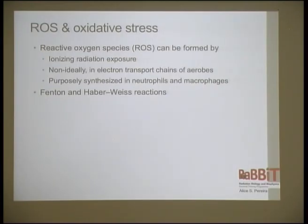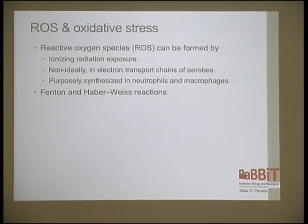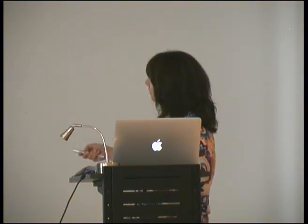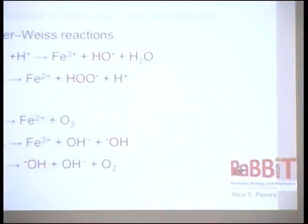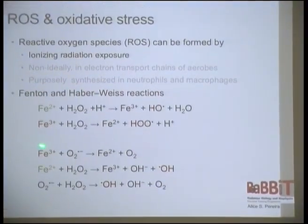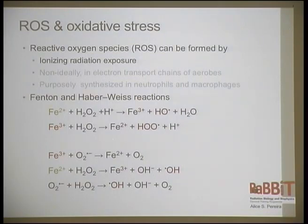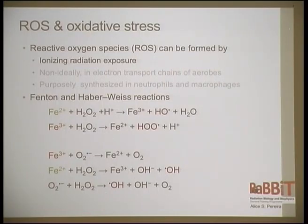Reactive oxygen species, or ROS, are not new for all of us. They can be formed by exposure to ionizing radiation, or they can be the result of leaking on the respiratory chain. If we have free electrons in an aerobic environment, we can generate those species, or we can have them in metabolism as a response to the immune system. The chemical reactions involved here are Fenton and other related reactions — the reaction of iron species in an aerobic environment — where ferrous or ferric ions reacting with hydrogen peroxide can generate these reactive oxygen species, which are very reactive and can generate a lot of cellular damage.